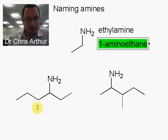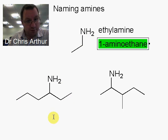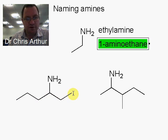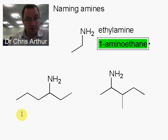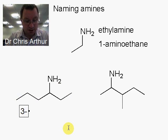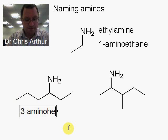This naming system works for more complicated examples. Here we have a six-carbon chain — one, two, three, four, five, six — and we have an amine on the third carbon. So this is 3-aminohexane.